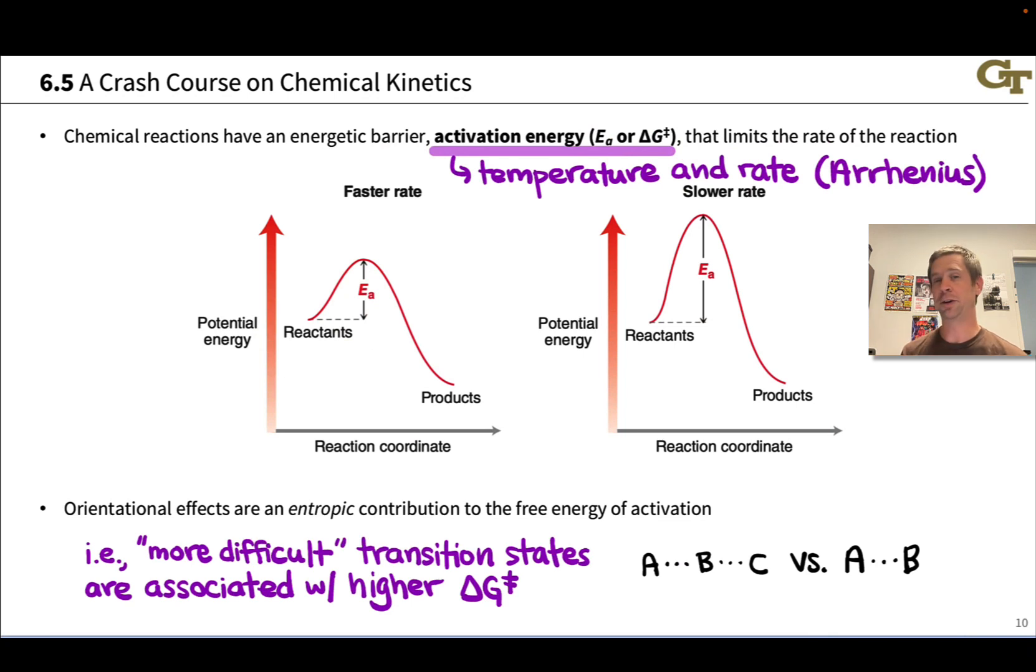So for example, asking three molecules to come together in a transition state, A, B, and C, that is a much more ordered situation, we might say, than asking just two molecules to come together. So this is going to have a more negative entropy of activation and make the activation energy, free energy, higher.